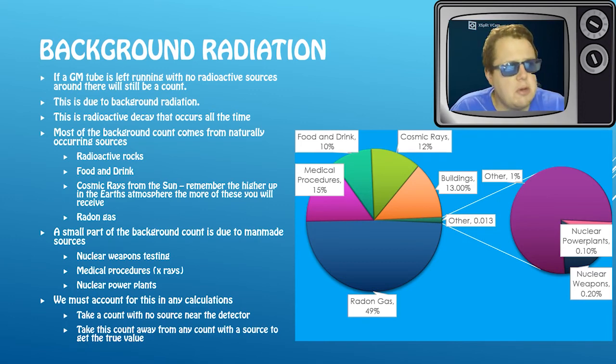Now most of the background count comes from naturally occurring sources, things like radioactive rocks - so granite, old rocks probably have got uranium ores in them, and that'll make them radioactive. Your food and your drink - potassium-40 is a radioactive isotope of potassium, so foods that are high in potassium are slightly radioactive, for example, Brazil nuts and bananas.